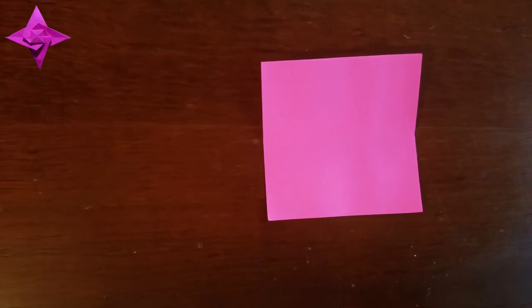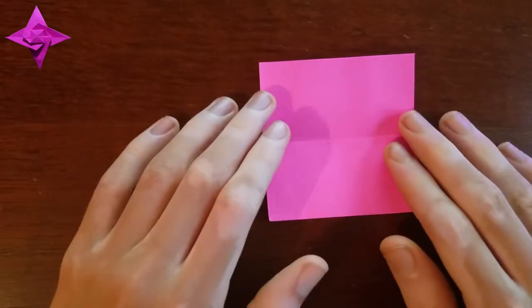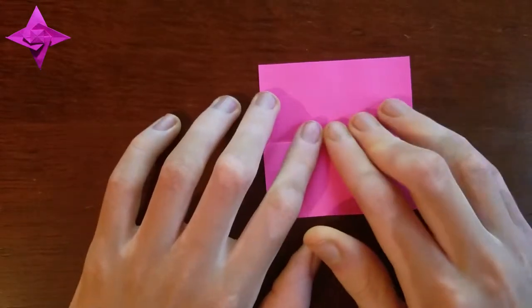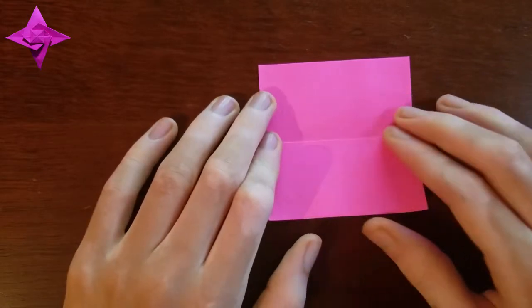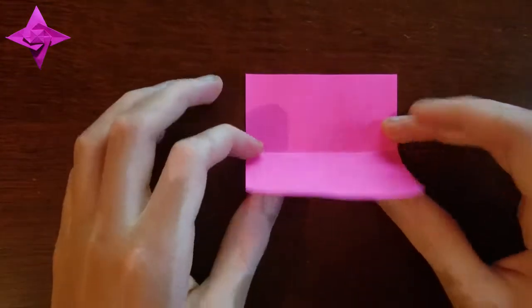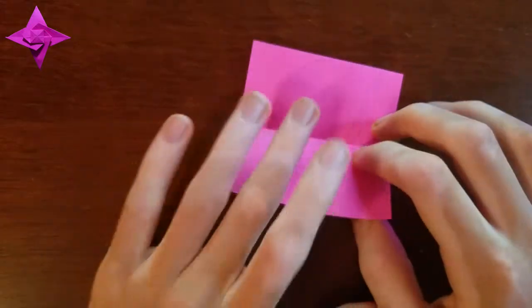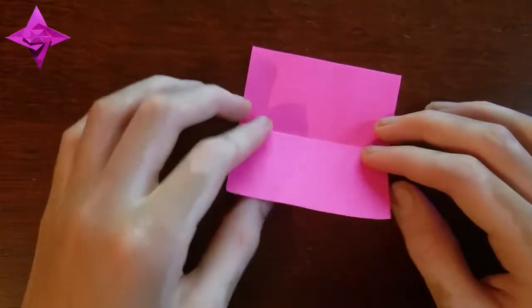You're gonna start with a square sheet of paper and we're gonna fold a bird base, so you already know how to do that but I'm gonna show you. First with the white side up, you have two-sided paper.